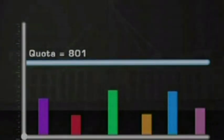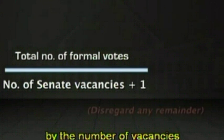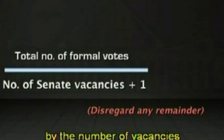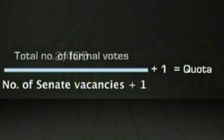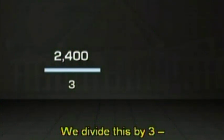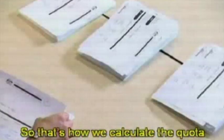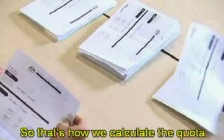Remember, we talked about a quota — the number of votes that has to be gained for a candidate to be elected. Here's how it's worked out: the quota is calculated by dividing the total number of formal votes by the number of vacancies plus one, then adding one. Let's say there are 2,400 formal votes. We divide this by three — that's two Senate vacancies plus one — which equals 800. We then add one, giving us a quota of 801. So that's how we calculate the quota that Elizabeth and Tony needed.